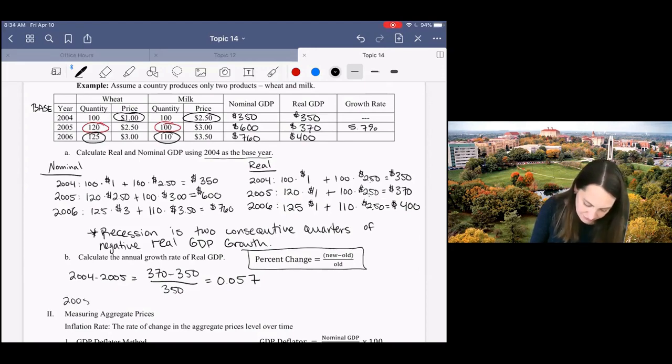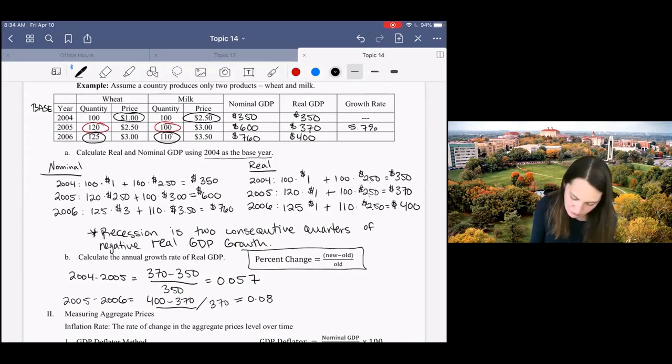From 2005 to 2006, we're going to do 400 minus 370 all over 370, and that would give you 0.81, or 8.1%.